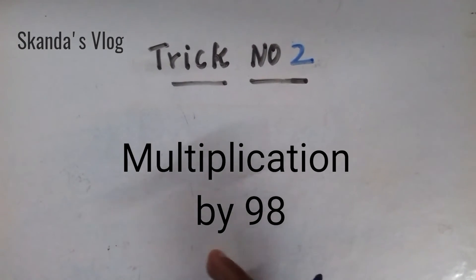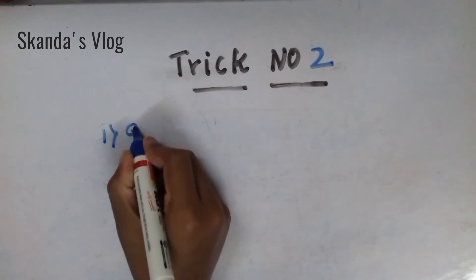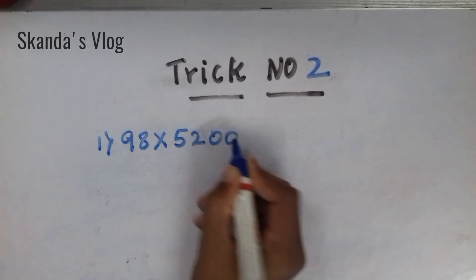So, friends, we will move on to the trick number 2. Multiplication by 98. First example, 98 into 5, 2, 0, 0.